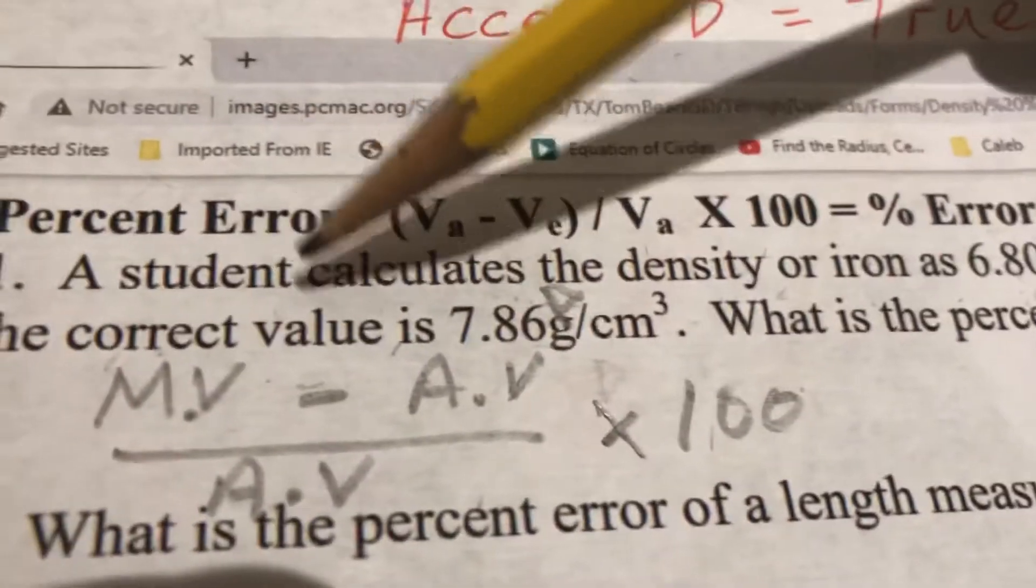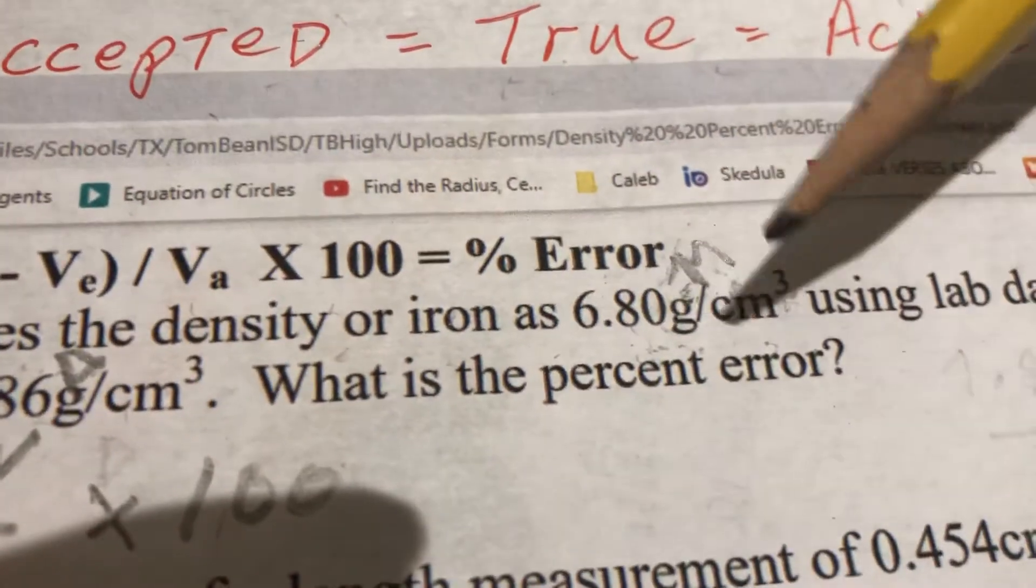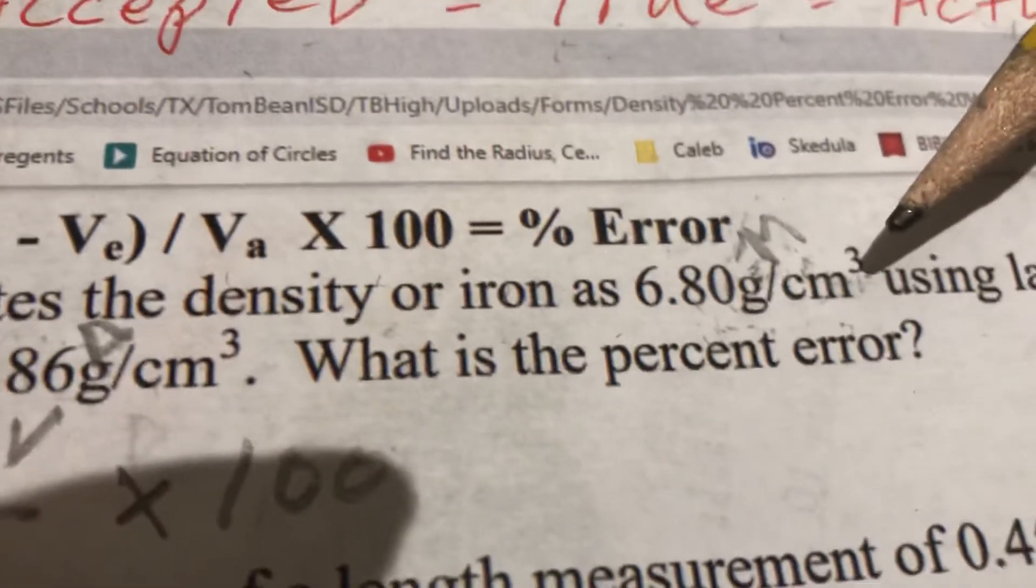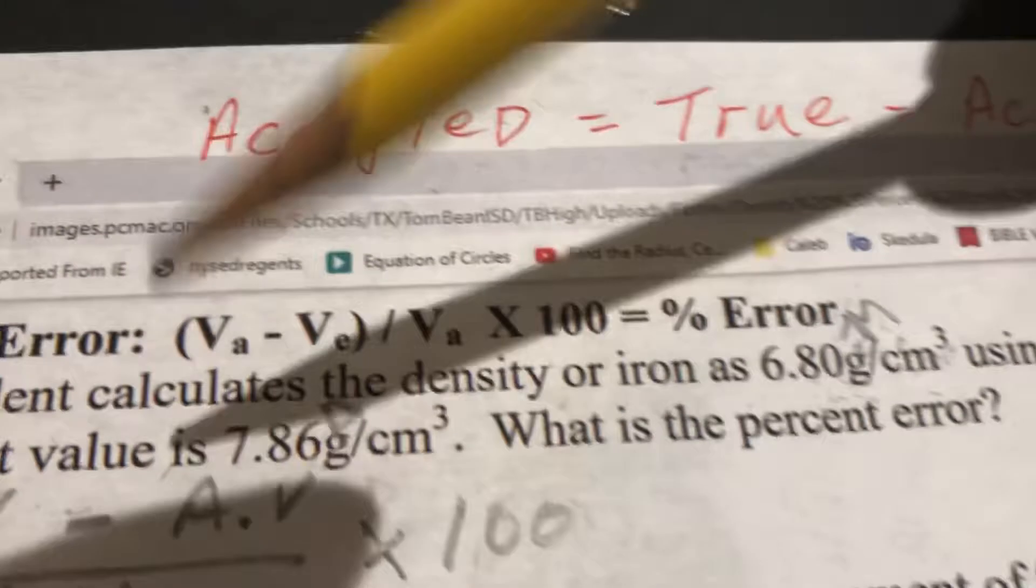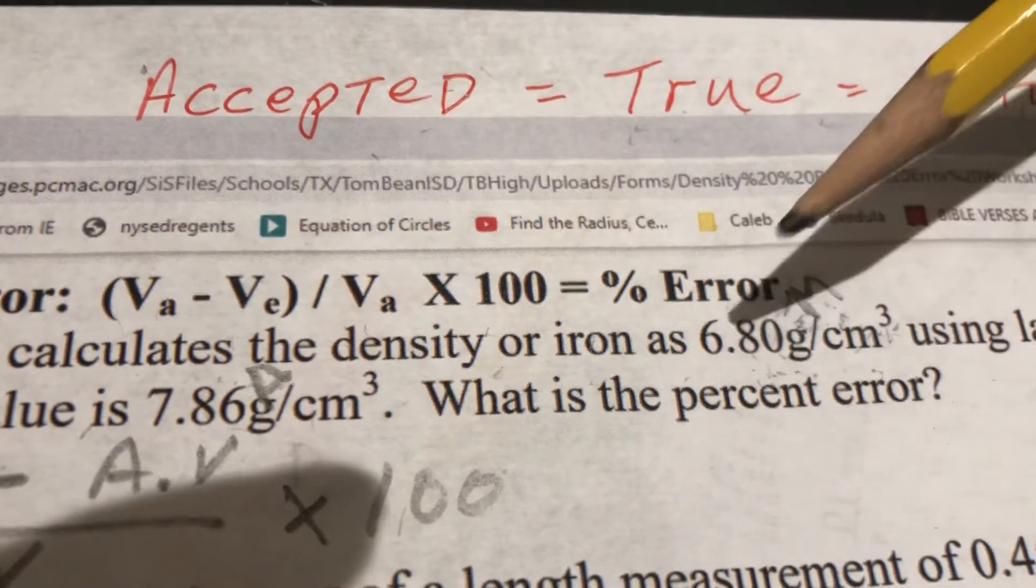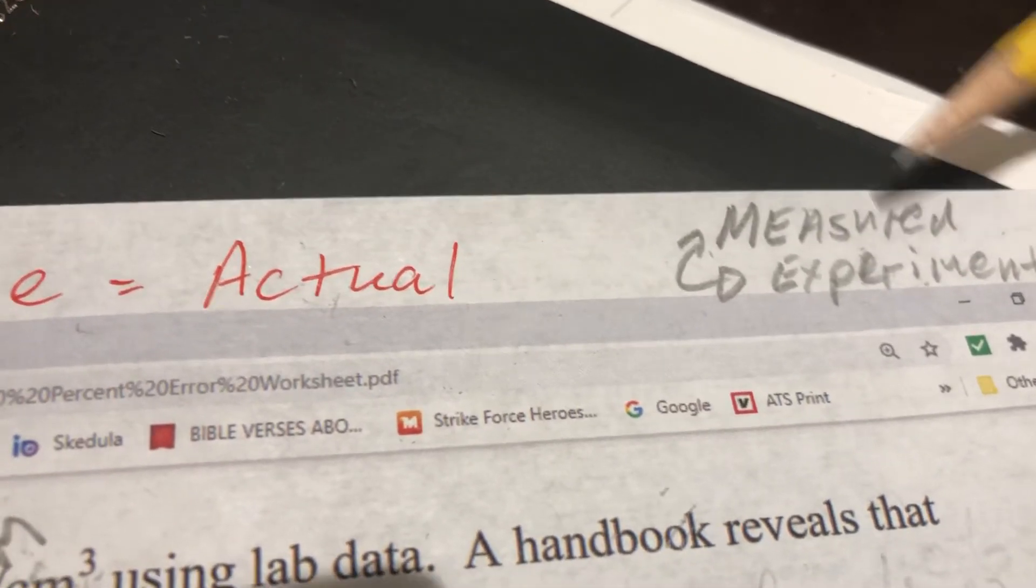So let's say we have a problem. Student calculates the density of iron to be 6.80 grams per centimeter cubed. Now, you don't move on from there. You take a breath. You ask yourself, since the student's doing experiments, that's called either the experimental value or the measured value, the one that the student measured.